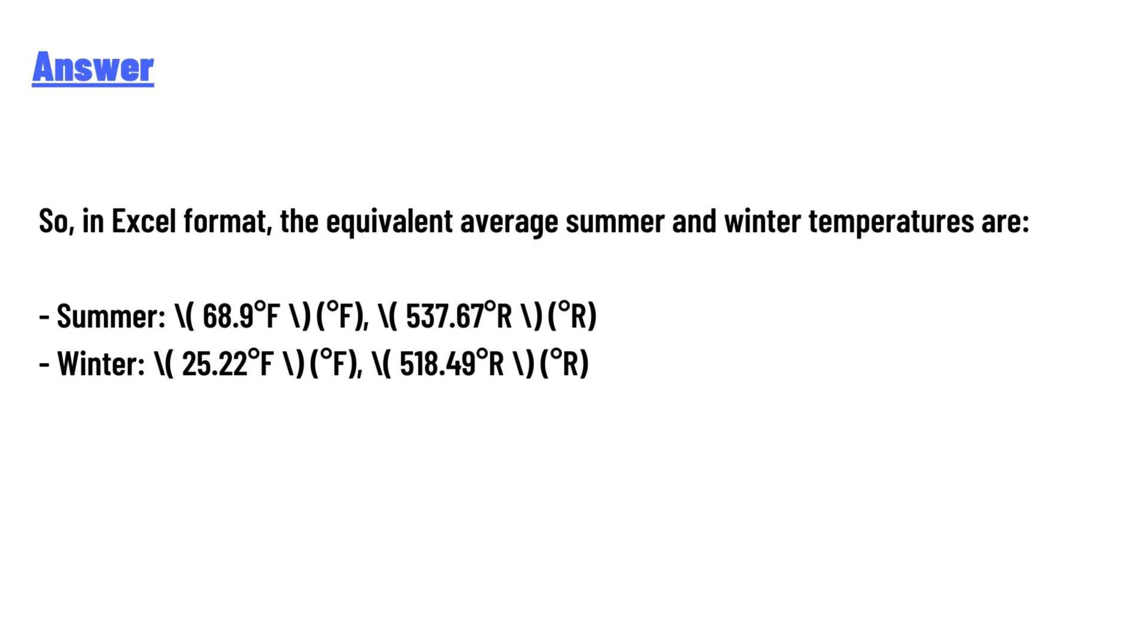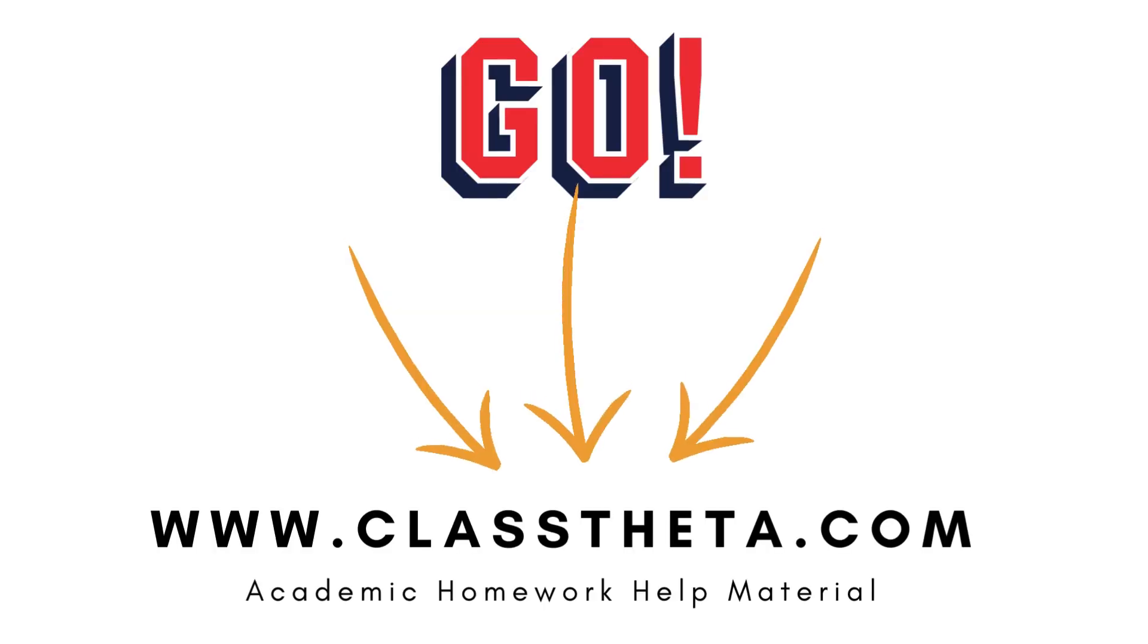So in Excel format, the equivalent average summer and winter temperatures in Fahrenheit are: summer 68.9 Fahrenheit, winter 25.22 Fahrenheit.